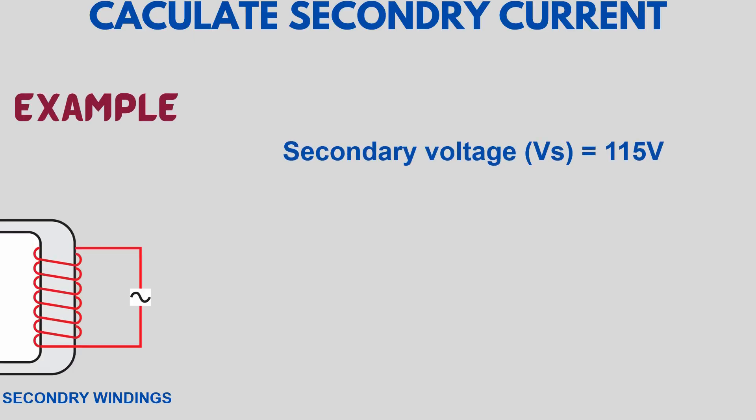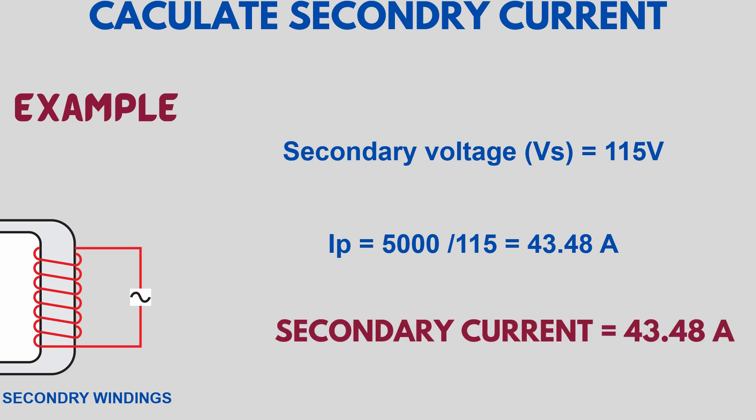So the secondary full load current is 43.48 amperes. Calculate secondary and primary full load current of a single phase transformer.